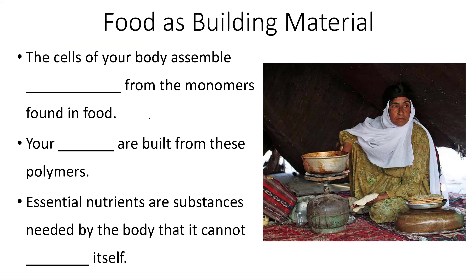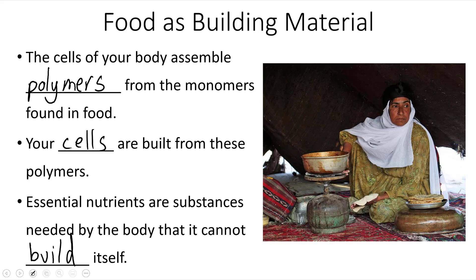We're going to talk about food as a building material. The cells of your body assemble polymers from the monomers found in your food, and your cells are built from these polymers. Essential nutrients are substances needed by the body that it cannot build itself. It's important to eat a balanced diet with all of your essential nutrients because those are essential building blocks.